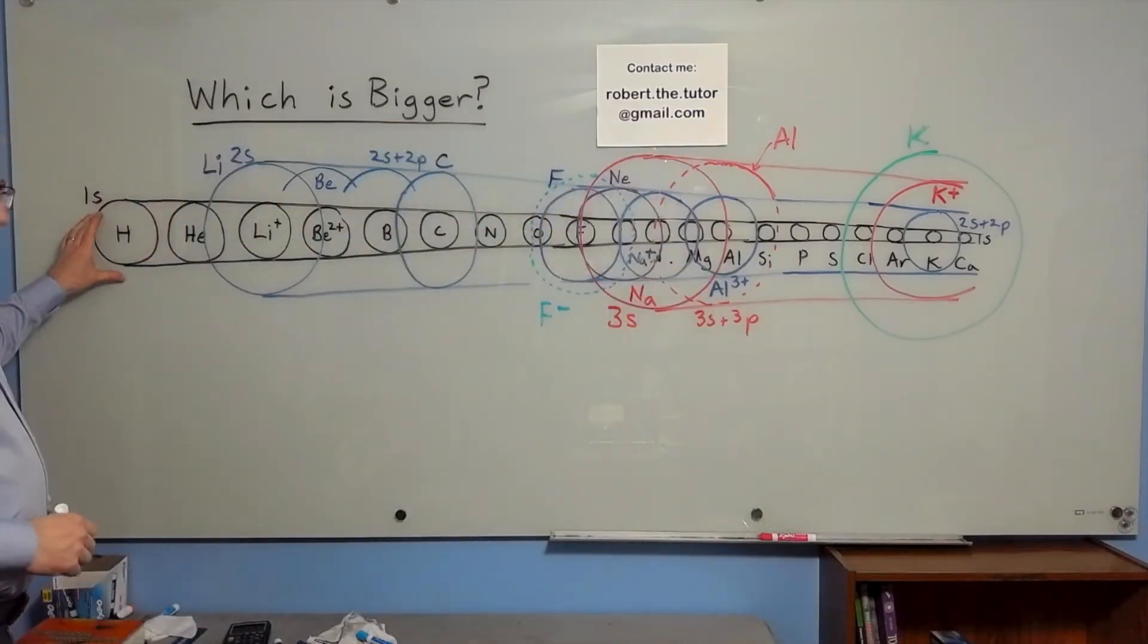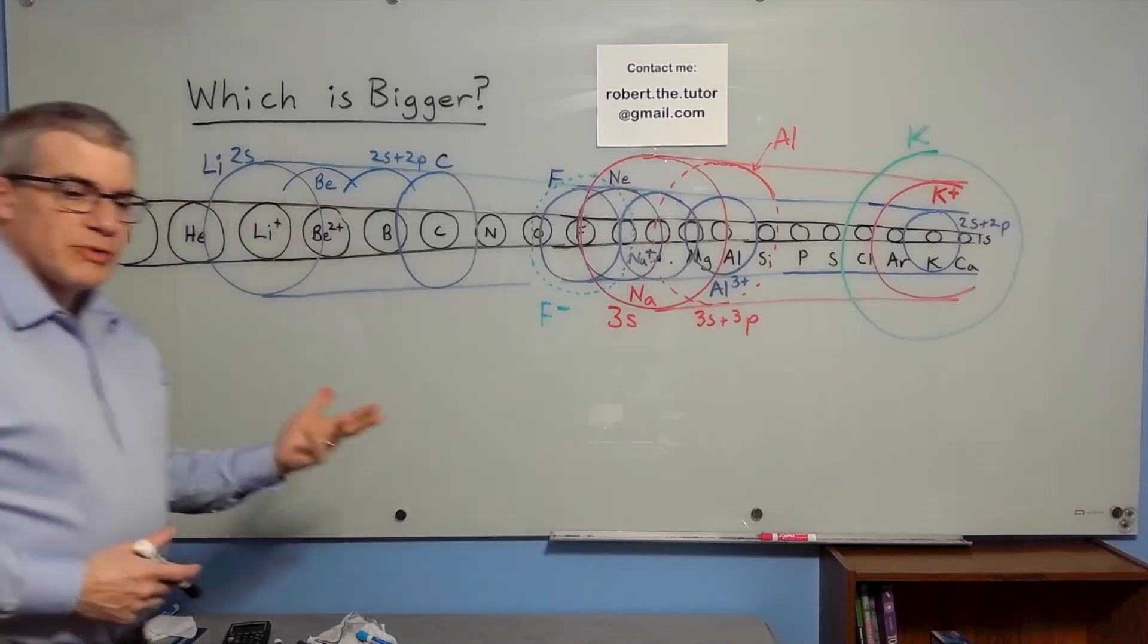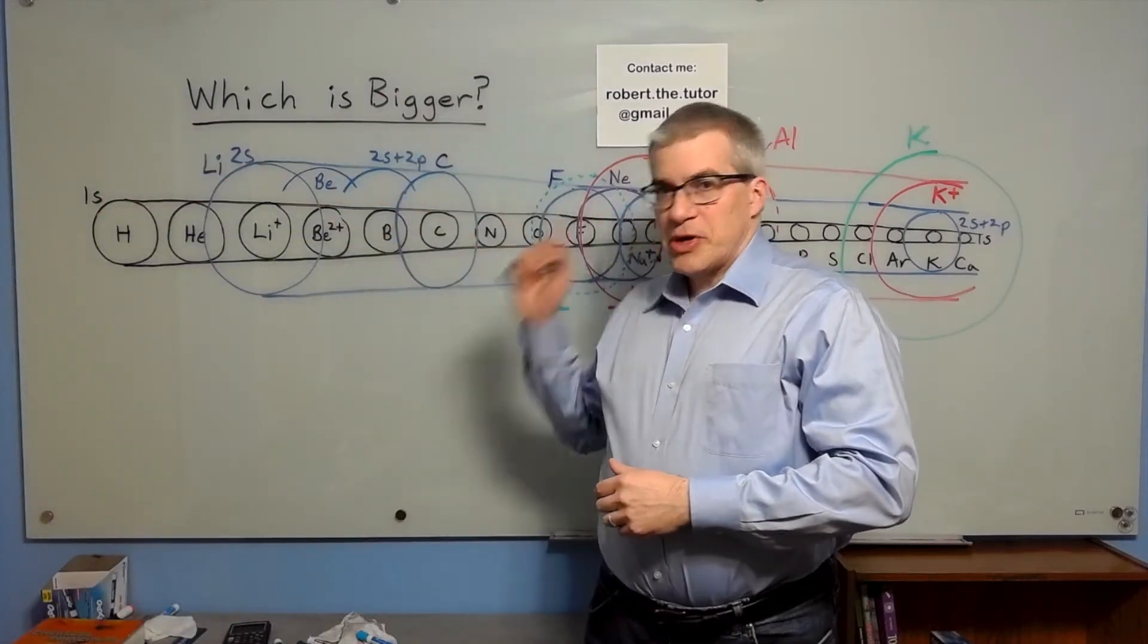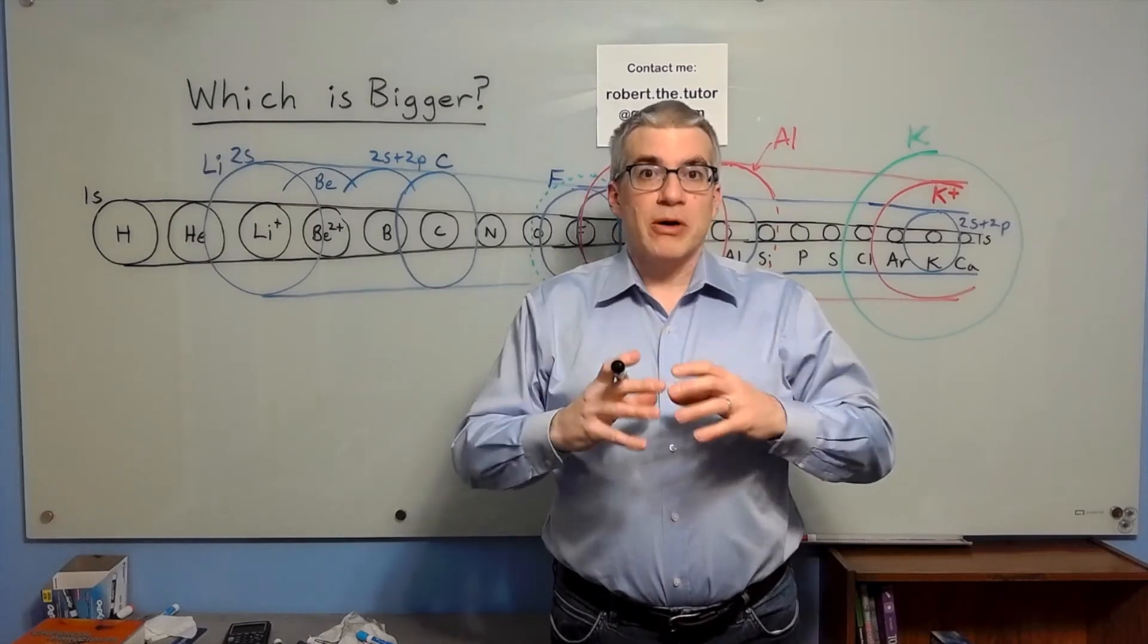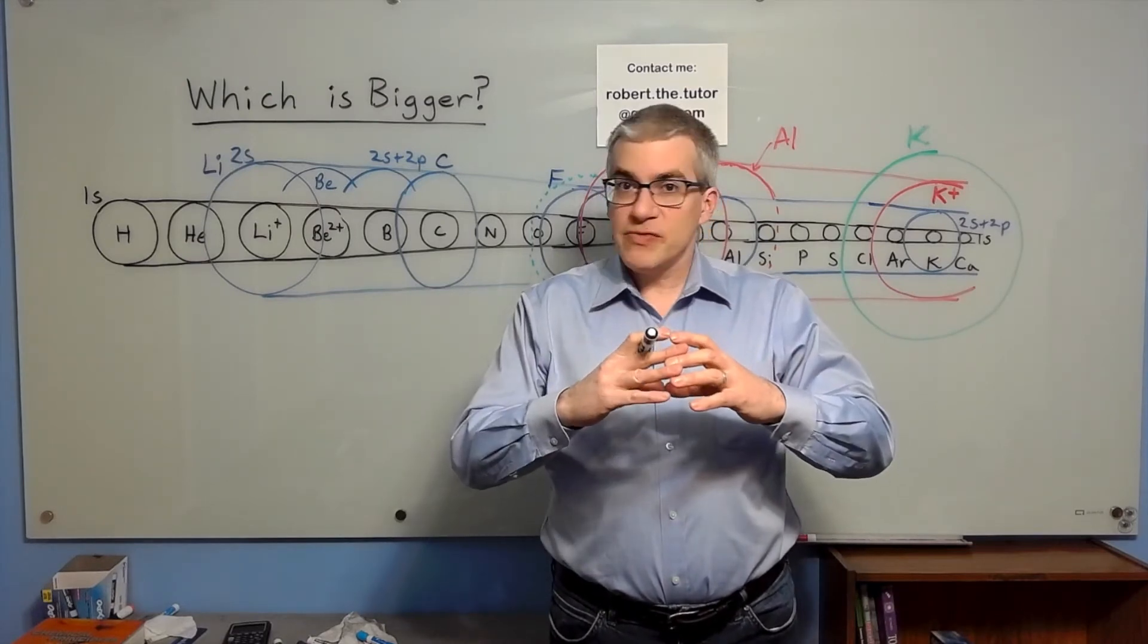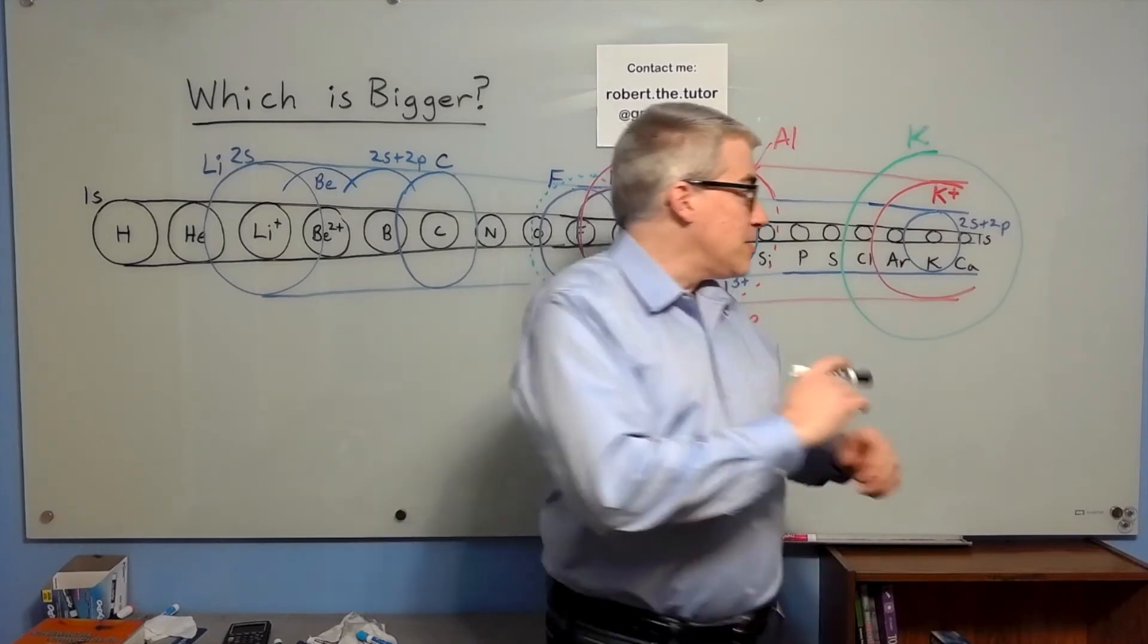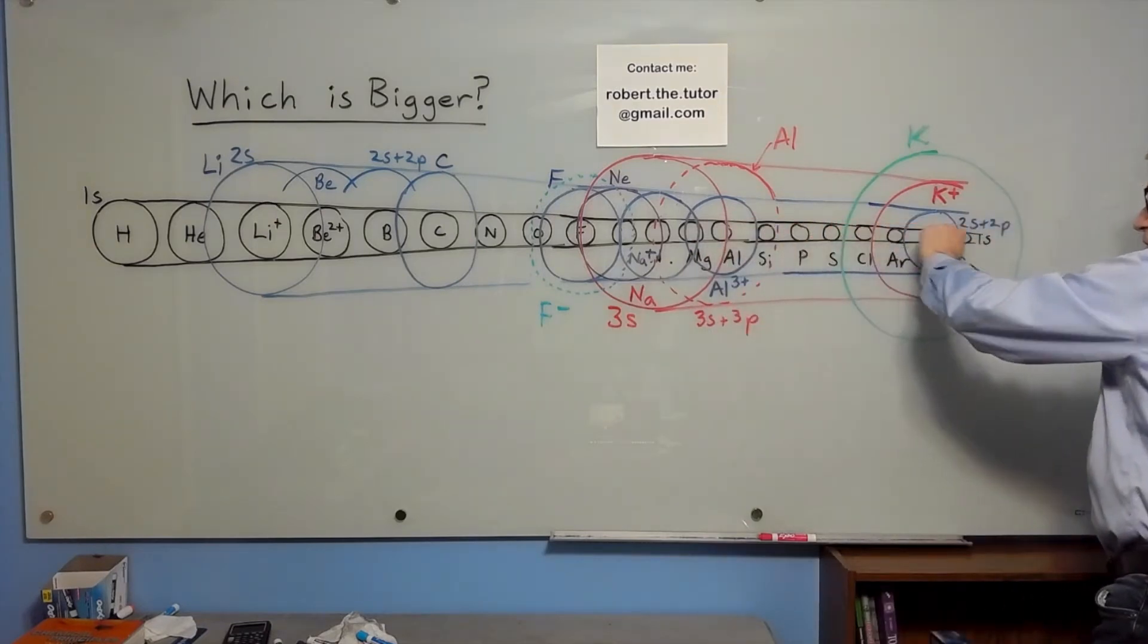Hydrogen just has a 1s orbital. Helium has a 1s orbital. But lithium and beryllium and boron, they have 1s orbitals as well. It's just that the further you go through the periodic table, the more protons you have in the middle. More protons is pulling harder. Those innermost electrons have no shielding, so they're just going to get pulled in tighter and tighter. And so the 1s orbital is getting very small as you keep going.